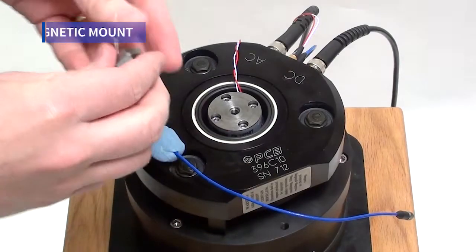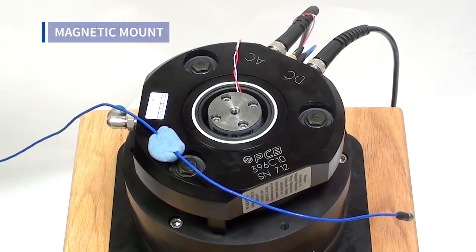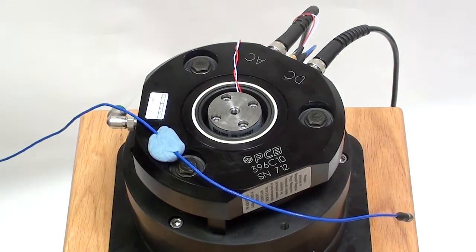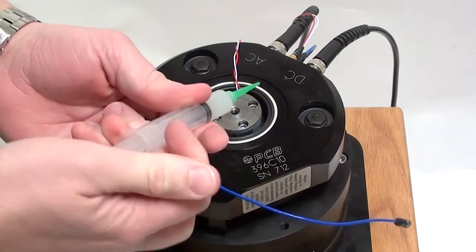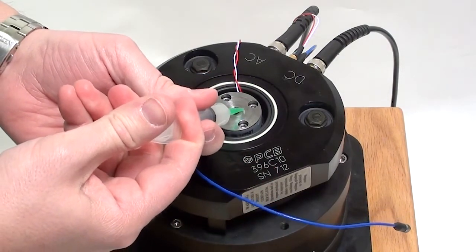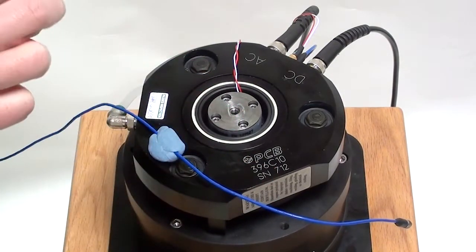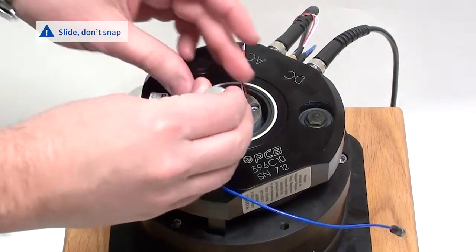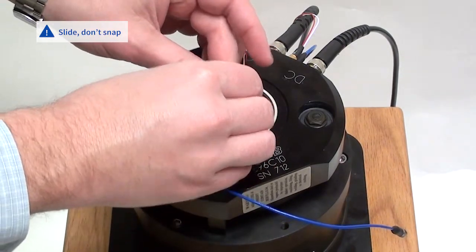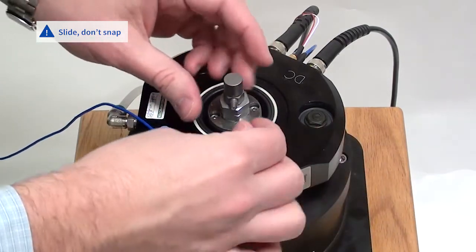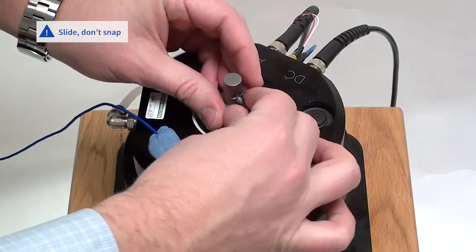The magnetic mount relies on a two-piece magnetic set, each of which is stud mounted to the mounting surfaces with the techniques noted previously. When connecting the magnets, take care to slide them together from the side and avoid snapping them together, which would damage the sensors.